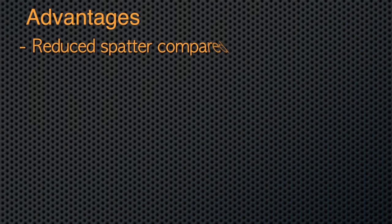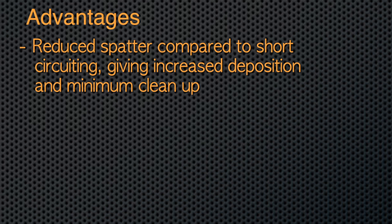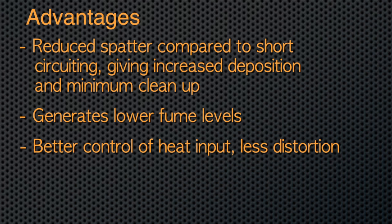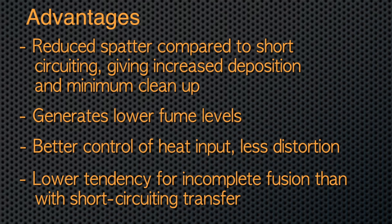Some of the advantages of the pulsed MIG process are reduced spatter compared to short circuiting, giving increased deposition and minimum cleanup. Lower fume levels. Better control of heat input allowing less distortion. Lower tendency for incomplete fusion than with short circuiting transfer.